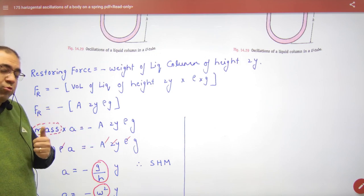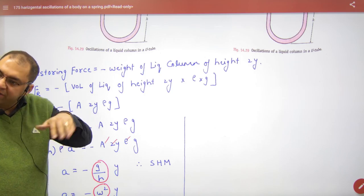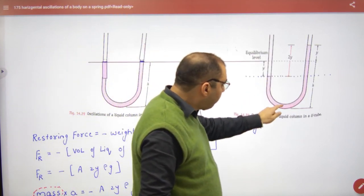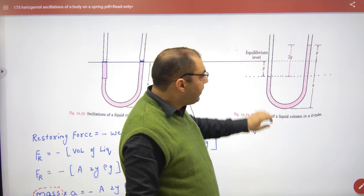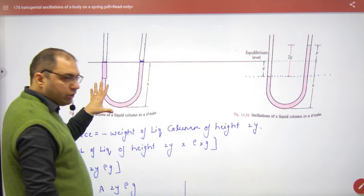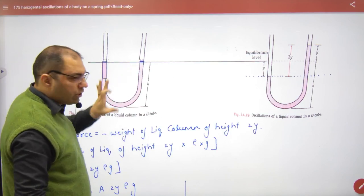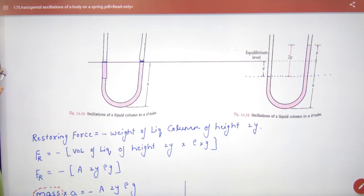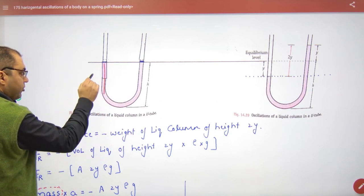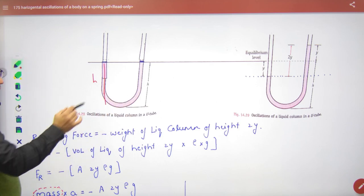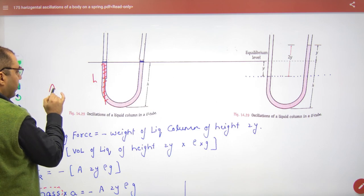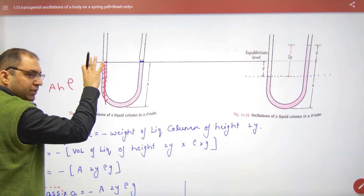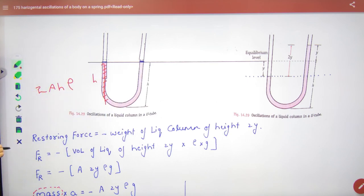Now how much liquid mass will move in the tube? It will move the whole liquid. Now what will be the whole liquid mass? This liquid mass and this liquid mass. Instead of finding this liquid mass and this liquid mass separately, we will remove the mass from here and it will be easy. It will be easy because this height is given h and this is also almost h. So what will be the volume? Area into h. Volume into density gives the mass. Now there is so much mass here and so much mass here - twice multiplied.